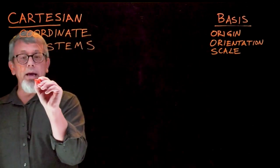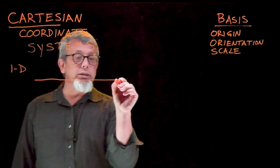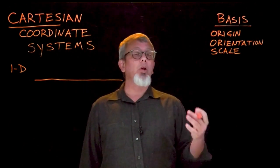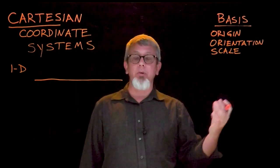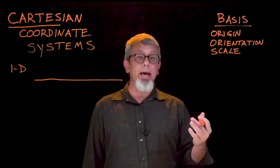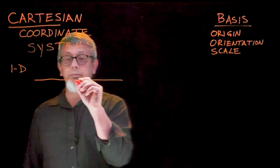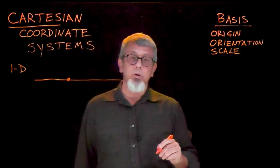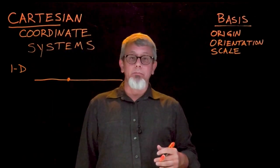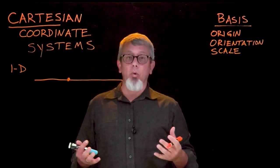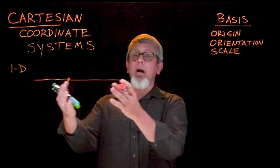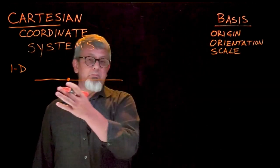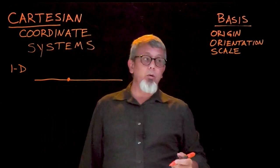I'm going to go ahead and draw my one-dimensional system as a straight line. Following our definition of basis, the first thing we want to do on that line is describe an origin. I'll pick a spot on that line as a reference starting point. Now I've defined an origin, and everything that we describe on that line is going to be denoted in reference to that origin.